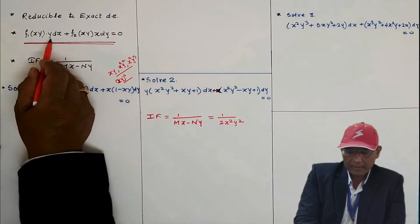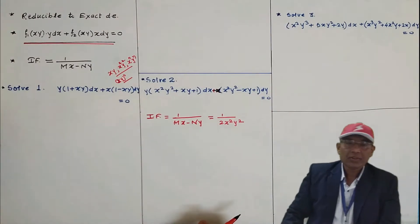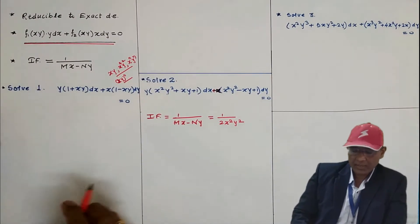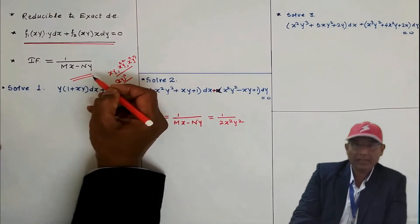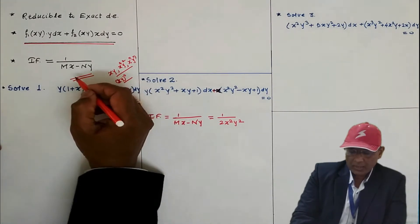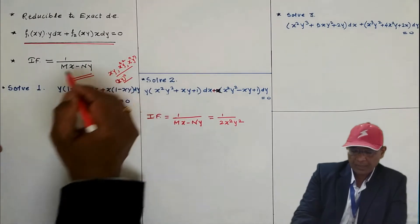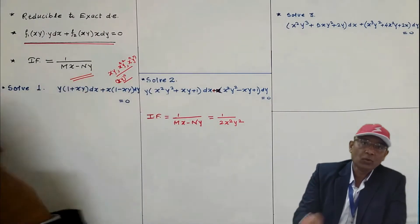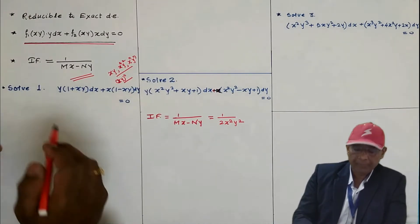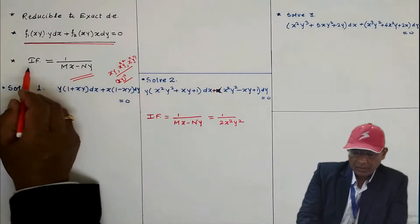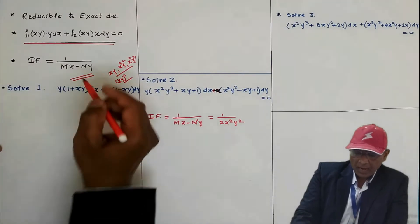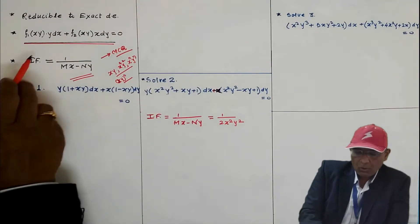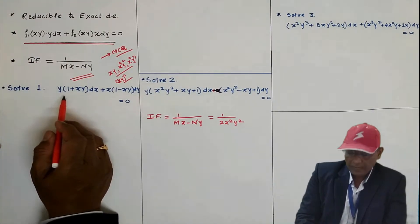This type of differential equation can be converted into an exact differential equation using an integrating factor. In the last video we used the formula 1/(mx + ny) for homogeneous equations where every term has the same degree. Here, for this type, we use the integrating factor formula 1/(mx − ny). This formula may also be asked as an MCQ.